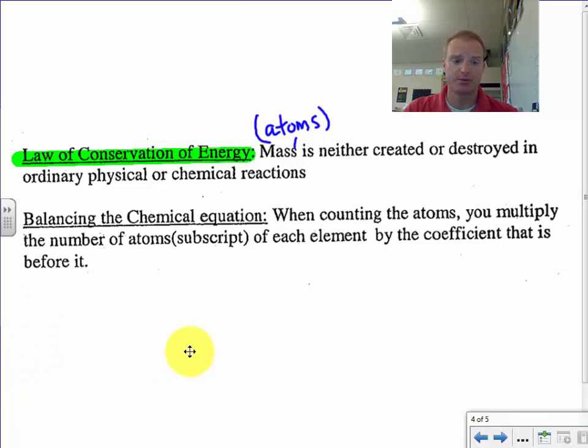So one more thing here, guys, I want you to write down. And this is kind of a lead-in to the next unit too. It's the law of conservation of energy, and also matter. It says mass, or like atoms, think of hydrogen and oxygen, is neither created or destroyed in ordinary physical or chemical reactions. It might be rearranged, but they're still there. So if you go back to the example from before, there's so many hydrogen and oxygen going in, and there's the same number of atoms afterwards.